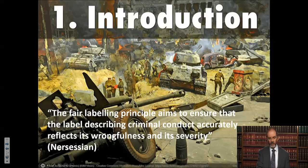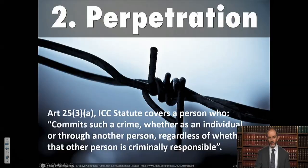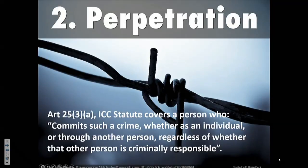Let's start delving down into the modes of liability. The core one, as we've already intimated, is obviously perpetration. If we look to the language of the International Criminal Court statute, Article 25.3(a) refers to a person who commits such a crime whether as an individual or through another person, regardless of whether that other person is criminally responsible or not. This covers a number of cases: you may individually and directly commit a crime, or you can commit a crime through another person — which leads to some questions about what it means if such a person is or is not criminally responsible.